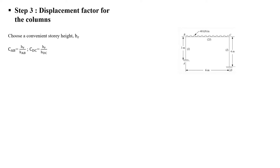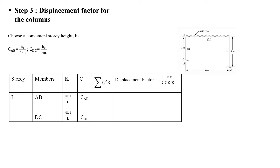When computing the displacement factor, we consider the correction factor. We compute sigma C squared times K, and then the displacement factor is computed using the formula: minus 3 by 2 times K times C, divided by sigma C squared times K.